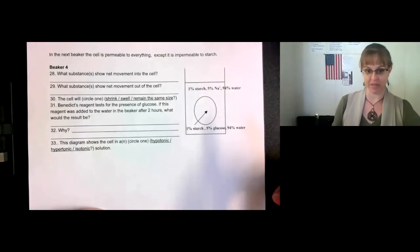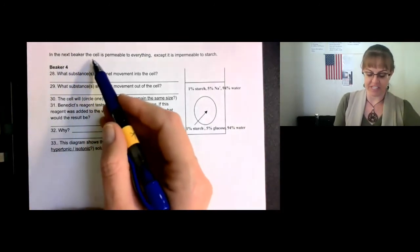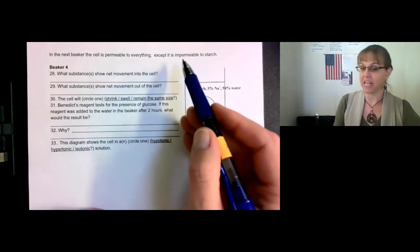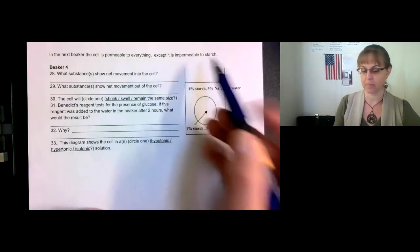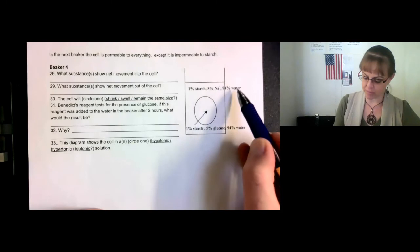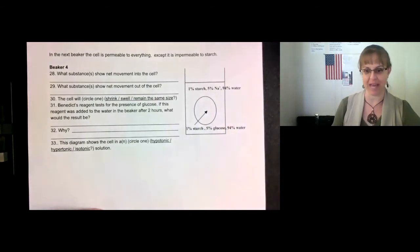Finally, in the last beaker, the cell is permeable to everything except it is impermeable to starch. So starch is the only thing that cannot pass through that semi-permeable membrane. Therefore, the sodium, the water, and the glucose can pass through.